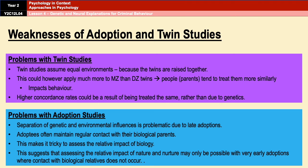A limitation of adoption studies is that the presumed separation of genetic and environmental influences is complicated by the fact that many children experience very late adoption, meaning much of their infancy and childhood could have been spent with their biological parents. Similarly, many adoptees maintain regular contact with their biological parents following adoption. Both points make it very difficult to assess the environmental impact biological parents might have had, because they're still having an impact either in the infant's early years or through regular contact.